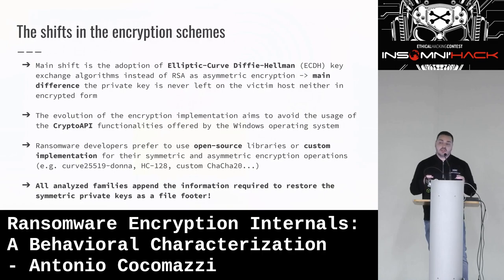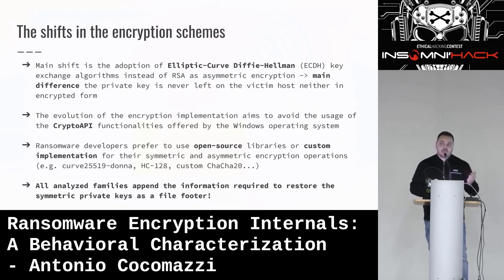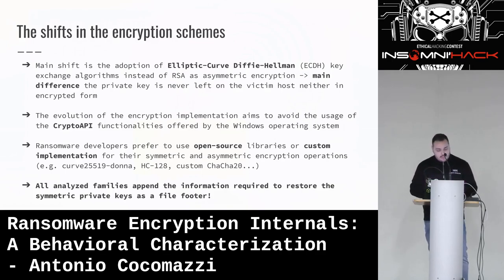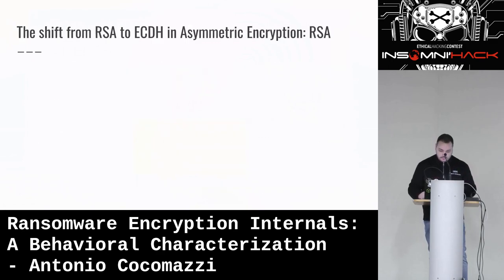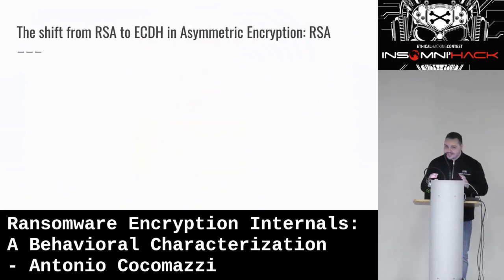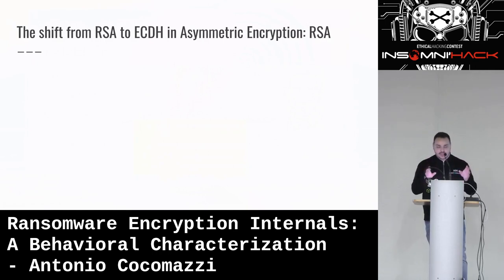The second evolution is that all the encryption implementations in ransomware are avoiding the use of the Windows CryptoAPI — the functions offered by the operating system. Instead, ransomware developers are using open source libraries or custom implementations because these operations are much stealthier. One interesting observation is that every analyzed family appends a specific piece of information to each encrypted file, and this piece of information is needed for the decryptor to work.